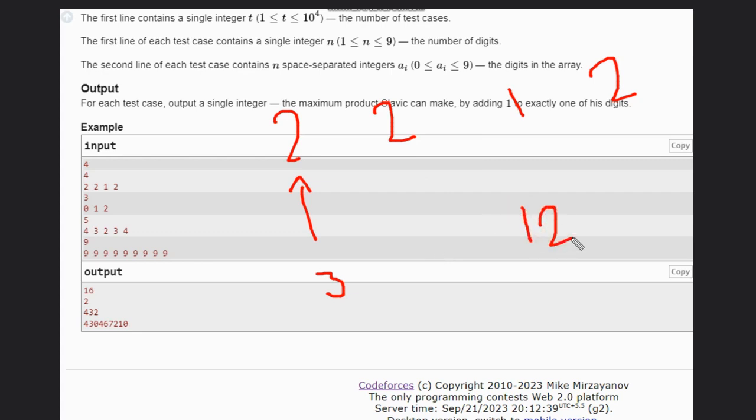Here, what if there are same digits like 2, 2, 2? If we increase this 2 to 3, then it will be 2 times 2 times 3, which equals 12. If we increase this to 3, then it will be 16. So that is greater than 12, so that will be our answer here.